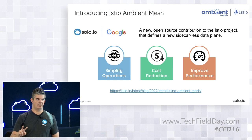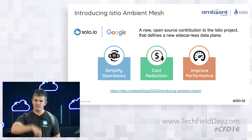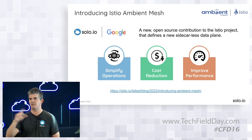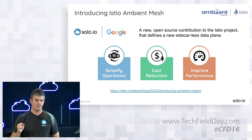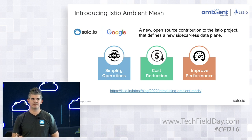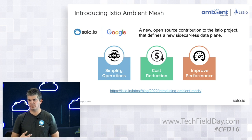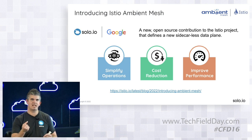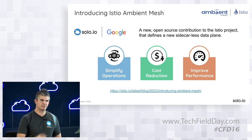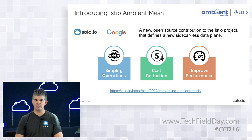We've run into use cases where an application had its own init container that communicated over the network and did a bunch of stuff before the application started up. Istio, when you inject the sidecar, also uses an init container that does some iptables magic so that all traffic routed to or from the application goes through the proxy. But in Kubernetes, there's no ordering of init containers — you can't specify the order. You can run into a scenario where Istio went first and then the app's init container ran and the ordering was wrong. They couldn't communicate over the network because the proxy wasn't ready.